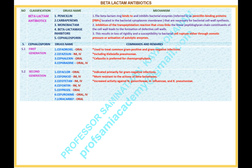Number 5.2 — Name of the classification: Cephalosporin, second generation. Drugs under this classification: 1. Cefaclor, available route: oral. 2. Cefonicid, available route: intramuscular and intravenous. 3. Cefoxitin, available route: intramuscular and intravenous. 4. Cefotetan, available route: intramuscular and intravenous. 5. Cefprozil, available route: oral. 6. Cefuroxime, available route: oral and intravenous. 7. Loracarbef, available route: oral. Comments and remarks: indicated primarily for gram-negative infections. More resistant to the actions of beta-lactamases. Increased activity against Neisseria gonorrhoeae, Haemophilus influenzae, and Klebsiella pneumoniae.